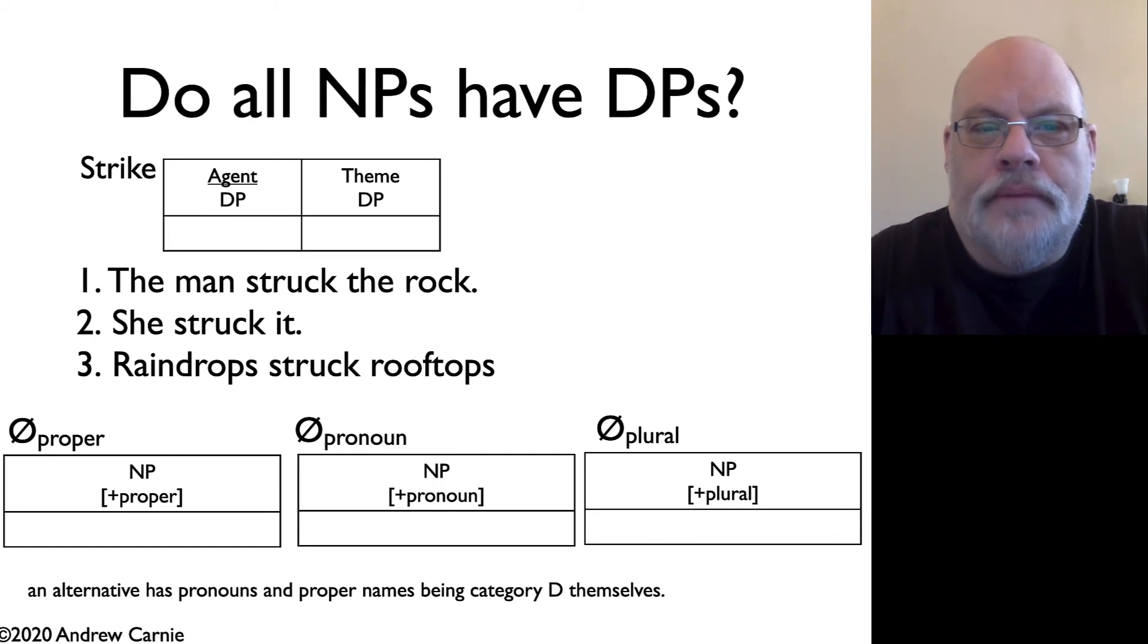This actually leads us to an interesting question. Do all noun phrases have DPs on top of them? Well, there's good reason to think that they do. So for example, let's take the verb 'to strike'. And strike requires an agent and a theme. And in the theta grids that we created in unit eight, you had to specify what category these things were. In this case, you have required two DPs. You can say, the man struck the rock, and that's fine. We have two determiners, two DPs. But it becomes problematic when you take a case like 'she struck it', where we have two pronouns, or a case where we have bare plurals without any determiner at all: raindrops struck rooftops. There's no determiner here.